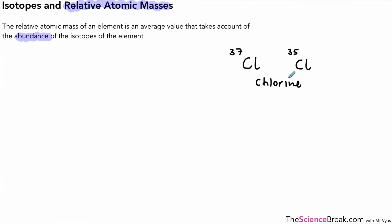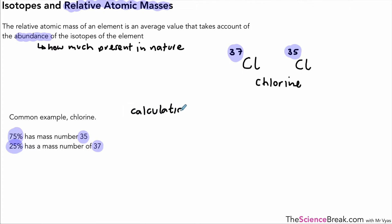Looking at chlorine in nature, we find two isotopes: chlorine-37 and chlorine-35. We look at the abundance of each—how much of each is present. If most chlorine is chlorine-35, the relative atomic mass would be closer to 35 than 37. Chlorine is a common example: 75% of chlorine has a mass number of 35, and 25% has a mass number of 37. How do we work out the relative atomic mass for chlorine on the periodic table?